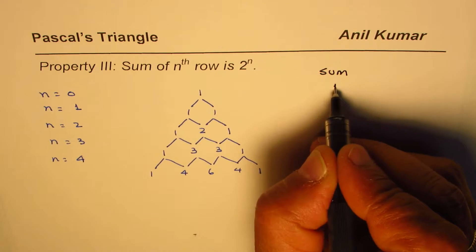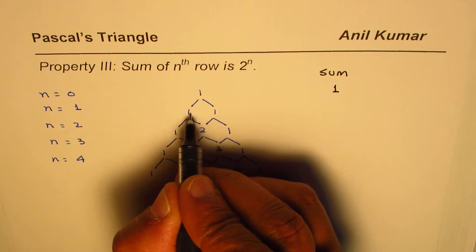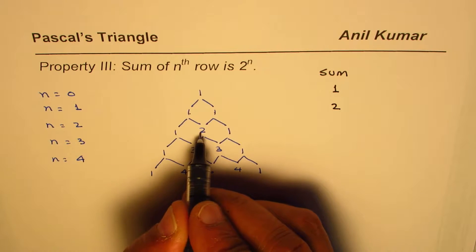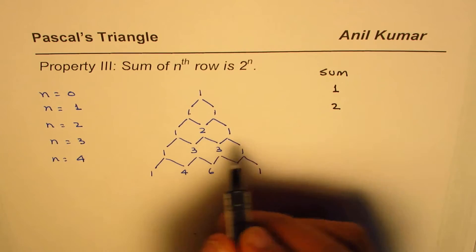So for the first row, the sum is 1, and then we add 1 and 1, which is 2. Then we have 1 plus 2 plus 1, which is 4.